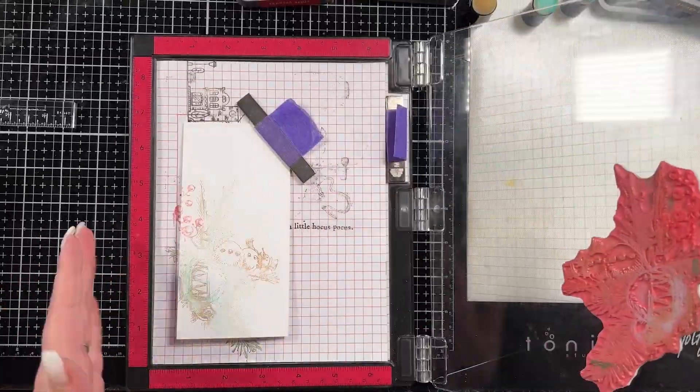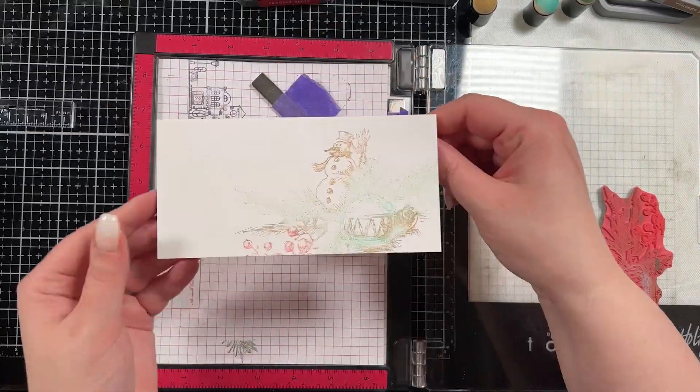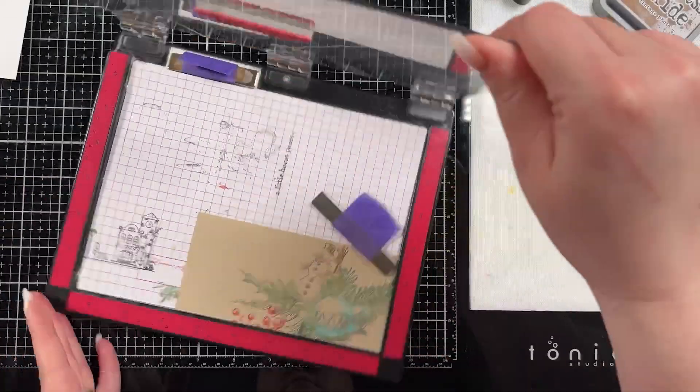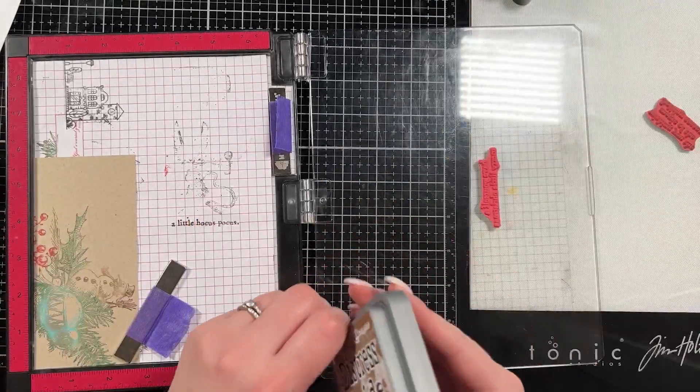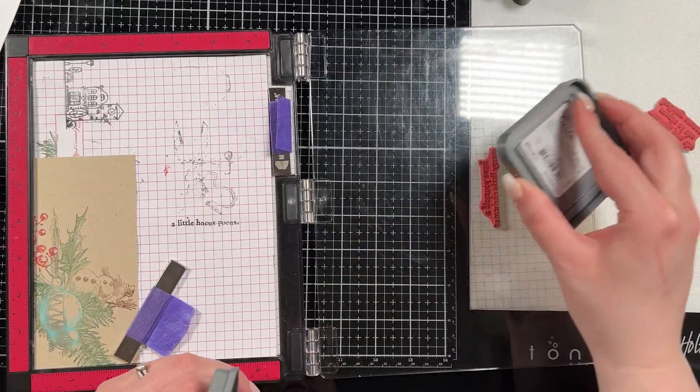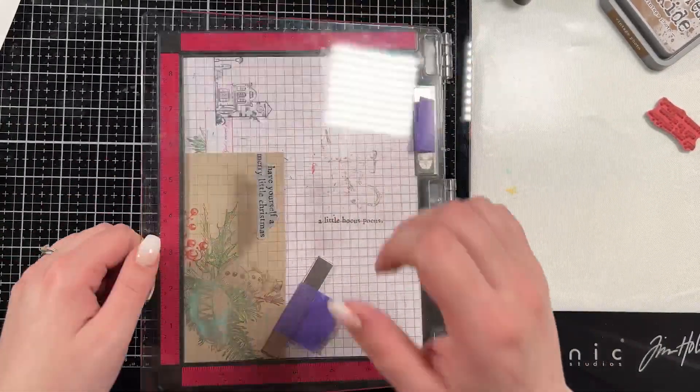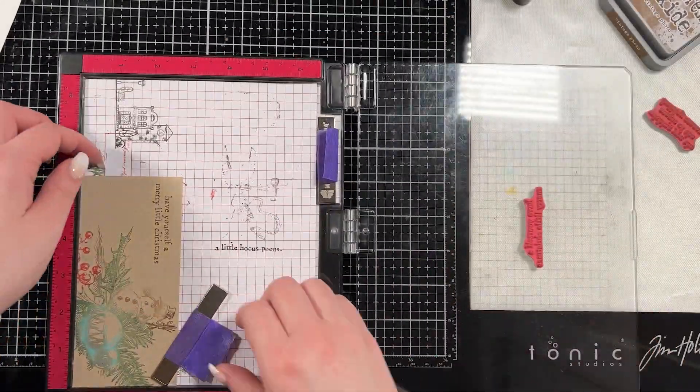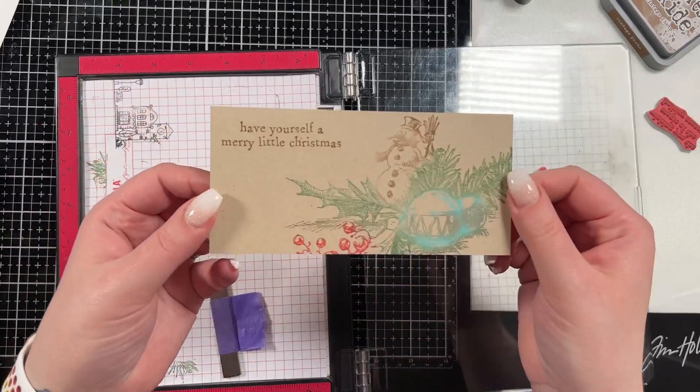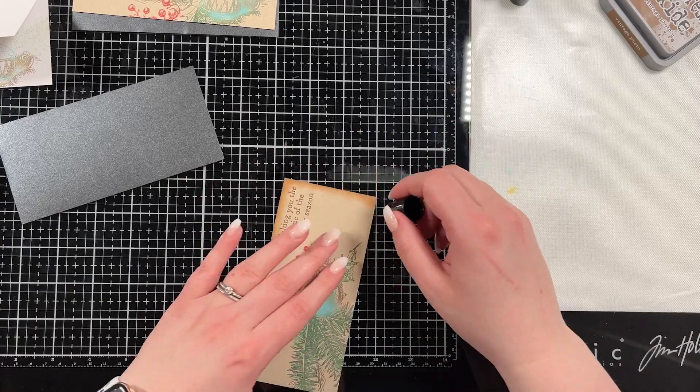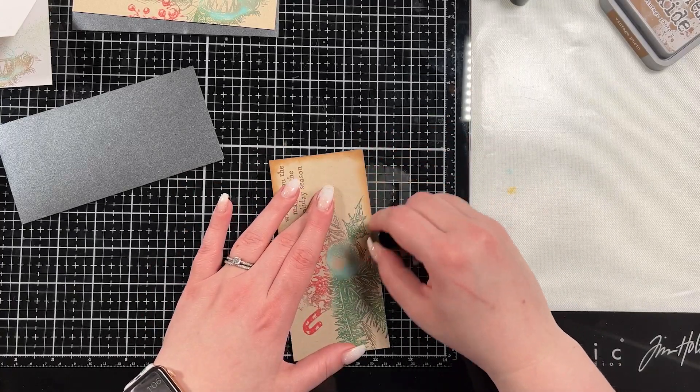And then here I'm just stamping the inside of my base with whatever ink is left on the stamp. Instead of wasting that ink, I just stamped it down on the base of my card there. And then here I brought in a sentiment and I'm using vintage photo again. And I did put it on directly to the stamp because I wanted it to be a bit brighter, a bit more bold because it is the sentiment.